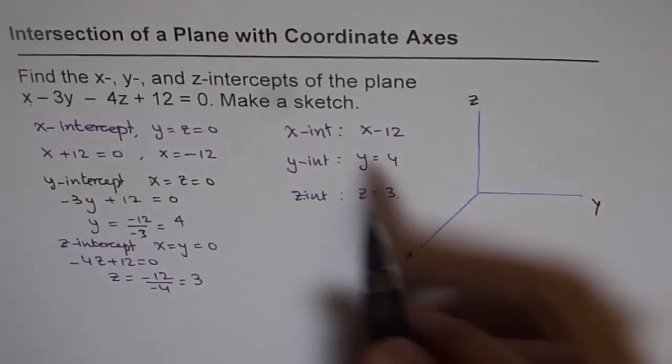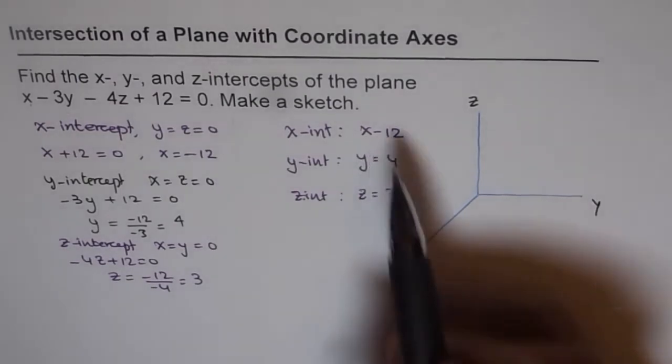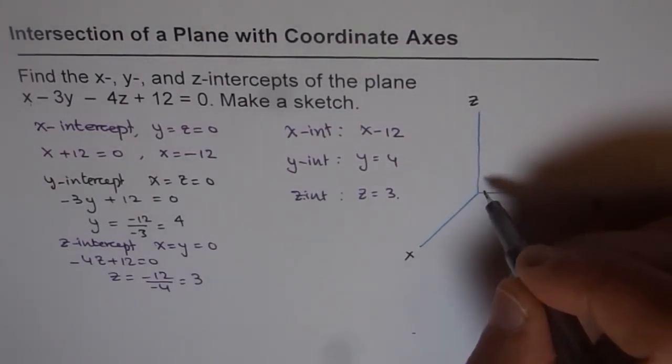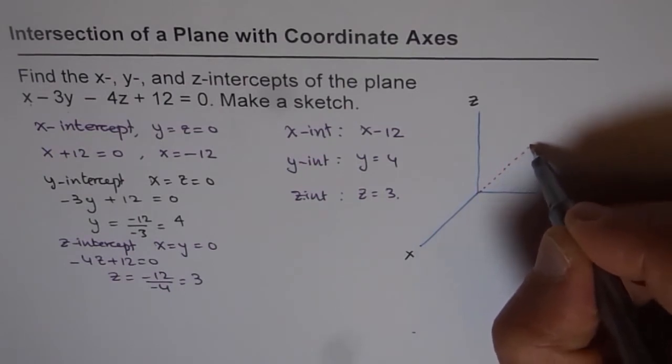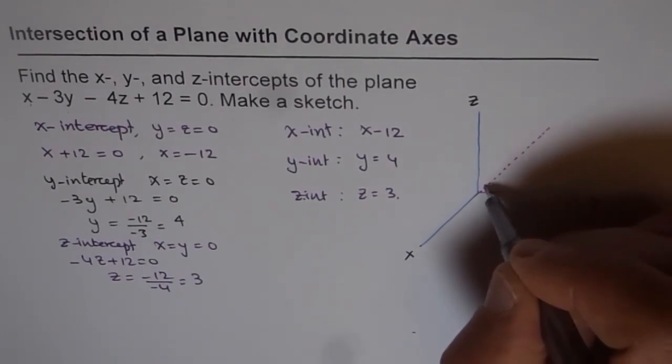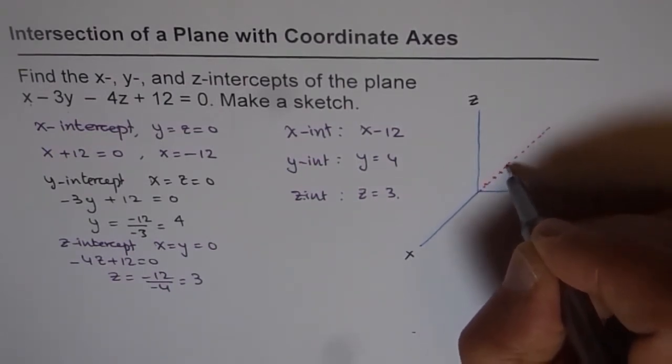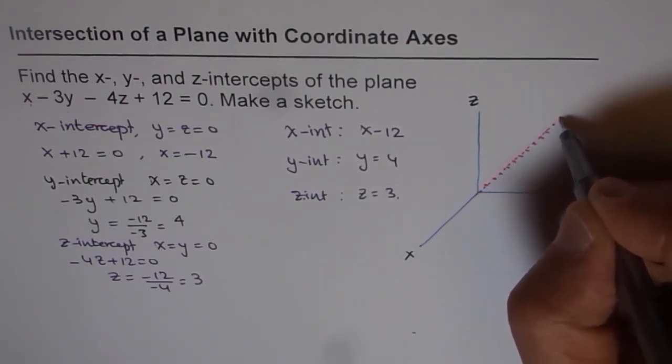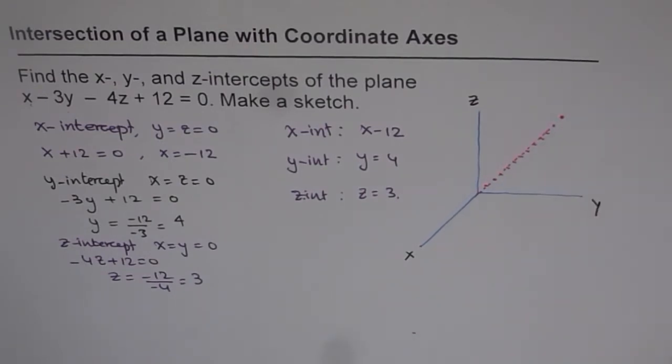So let's plot the x-intercept first, which is minus 12. Now, minus 12 will mean that this is the x-positive side, so we have to go this side. So that side will be for minus 12. Let's say the units are 1, 2, 3, 4, 5, 6, 7, 8, 9, 10, 11, 12. So that is the point which represents the x-intercept for us.